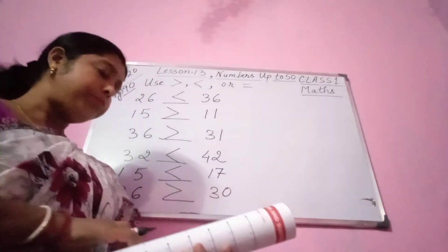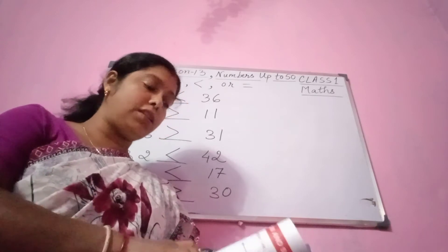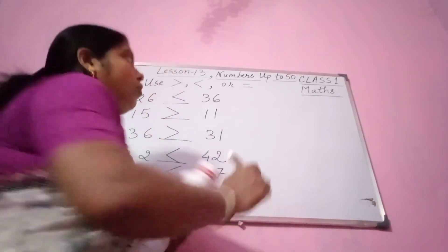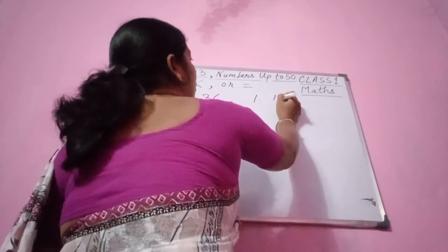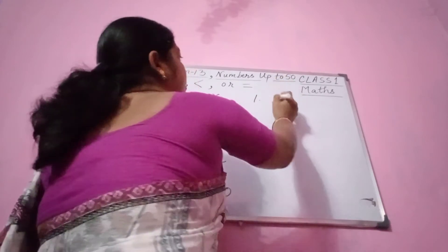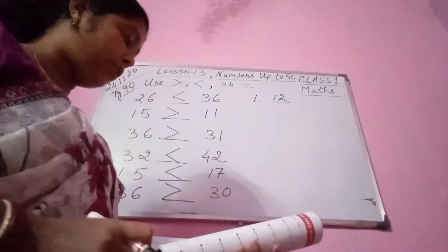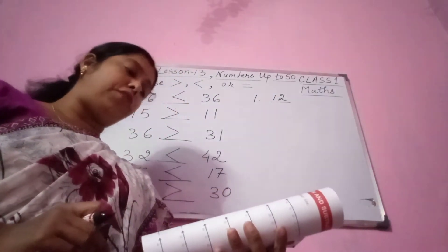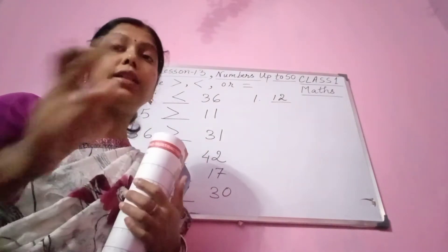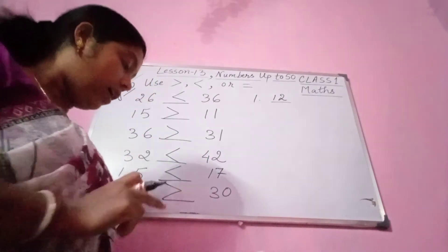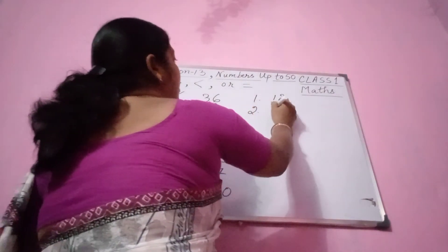Which is the smallest number? From the wheel, the smallest number is 12. Please note down the answers in your copies. Which number is less than 40 and more than 35? Please see in the wheel — 37 is here. Number 2 is 37.